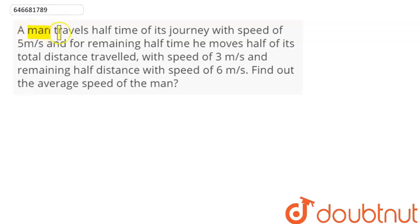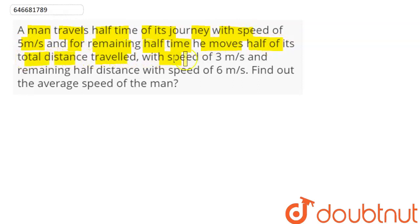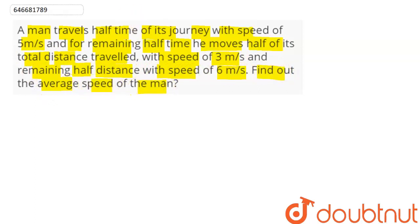The question is: a man travels half the time of his journey with a speed of 5 meters per second. For the remaining half time, he moves half of the total distance traveled with a speed of 3 meters per second, and the remaining half distance with a speed of 6 meters per second. Find the average speed of the man.